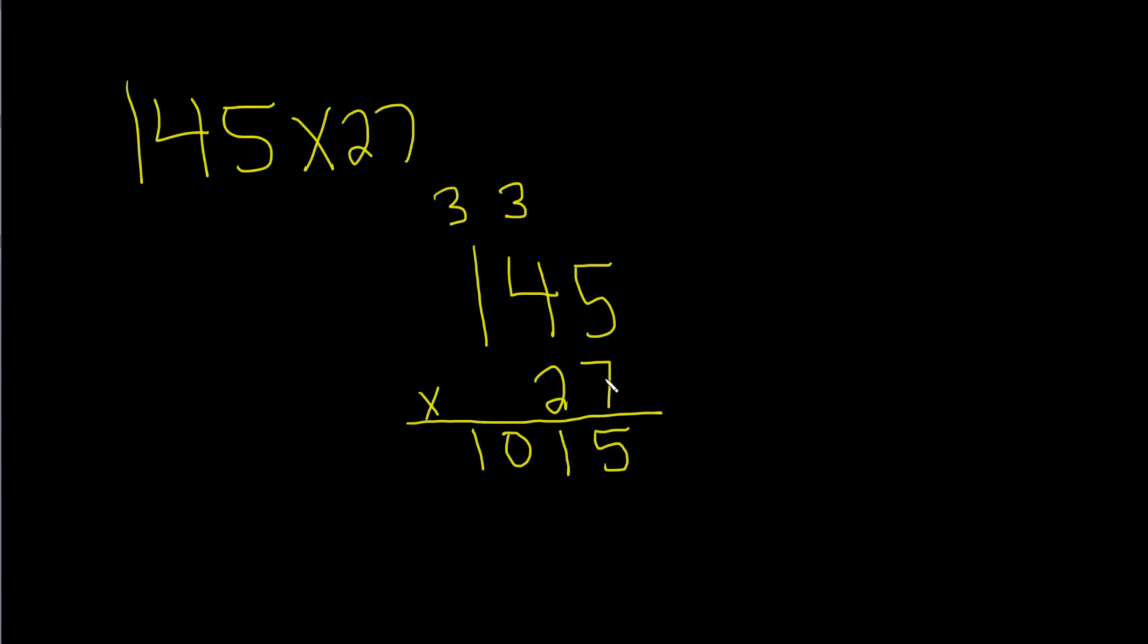Let me go over it again. 7 times 5 is 35. You write down the 5 and carry the 3. 7 times 4 is 28. 28 plus 3 is 31. You write down the 1 and carry the 3. 7 times 1 is 7. 7 plus 3 is 10.